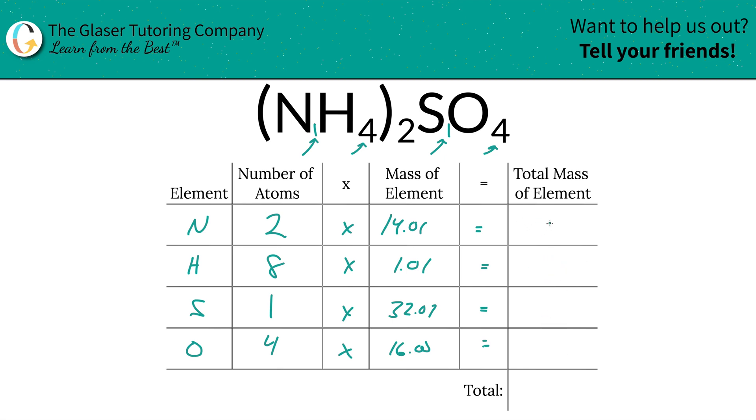And so 14.01 times two is 28.02, and this works out to be 8.08. This works out to be 32.07, and this works out to be 64.